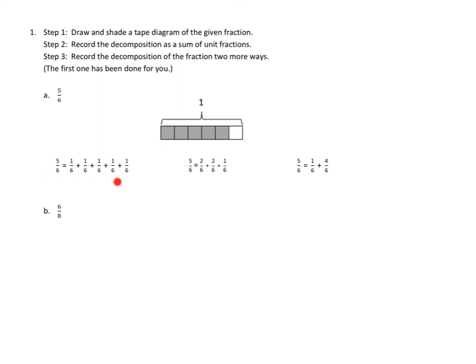How do they write out their sentences? They wrote it up as unit fractions. They said 5 sixths is the same as 1 sixth plus 1 sixth plus 1 sixth plus 1 sixth plus 1 sixth. And then in step 3, they're asked to record the decomposition in two more ways. They said 5 sixths could also be written as 2 sixths plus 2 sixths plus 1 more sixth.